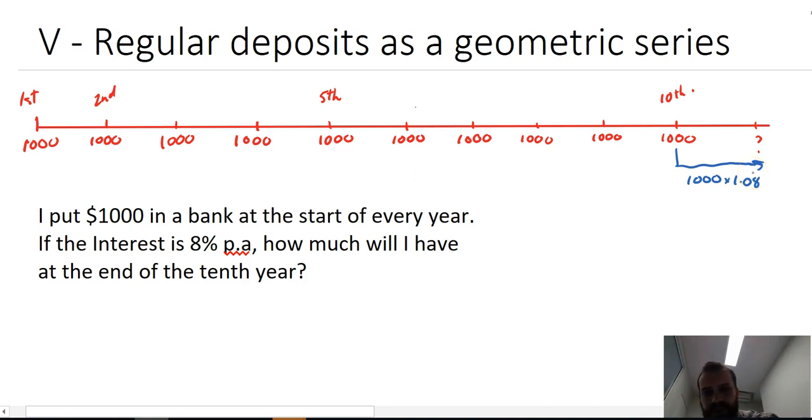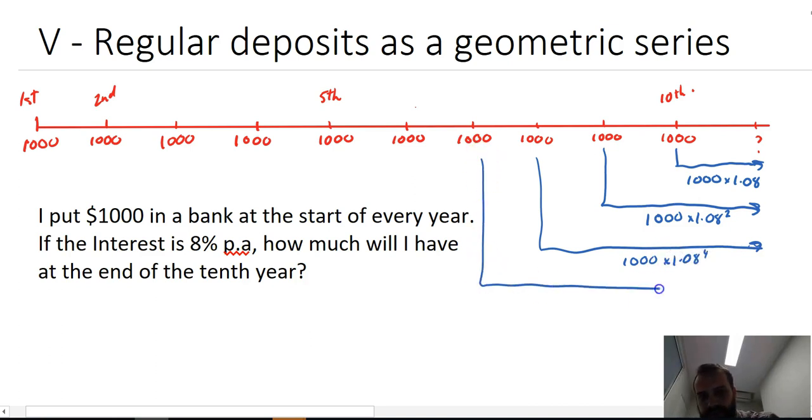so to the power of one. Now, this $1,000 will be $1,000 times 1.08 to the power of two, because it's been two years. This will be $1,000 times 1.08 to the power of four, and so on. 1.08 to the power of five.